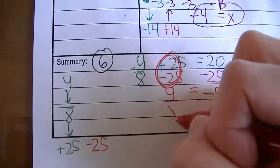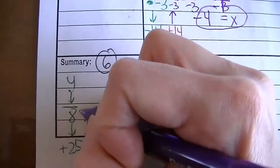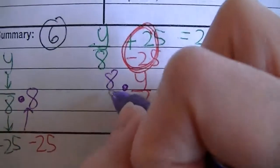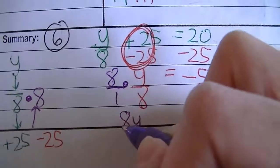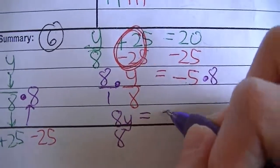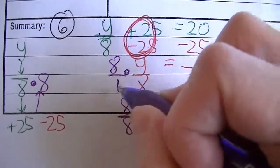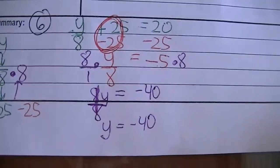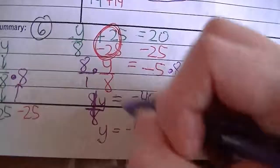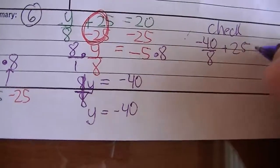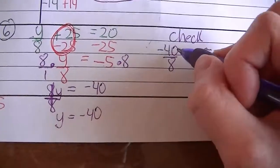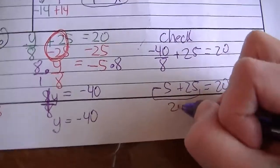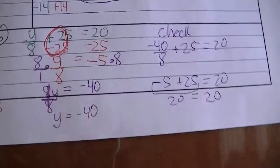Bring everything down — bring down your y divided by 8. Now go back up. The inverse operation of divided by 8 is to multiply by 8, so we're going to do that to both sides. We've got a fraction situation: 8 times y is 8y, 1 times 8 is 8, and negative 5 times 8 is negative 40. Remember it was multiply, so 8 divided by 8 is 1 — so 1y, or y, equals negative 40. Now go ahead and check it. Rewrite that original equation and substitute that negative 40 in. Negative 40 divided by 8 — negative divided by positive gives a negative answer — so negative 5, plus 25 equals 20. Negative 5 plus 25 is 20. Both sides of that equal sign are true, so that's the correct answer.